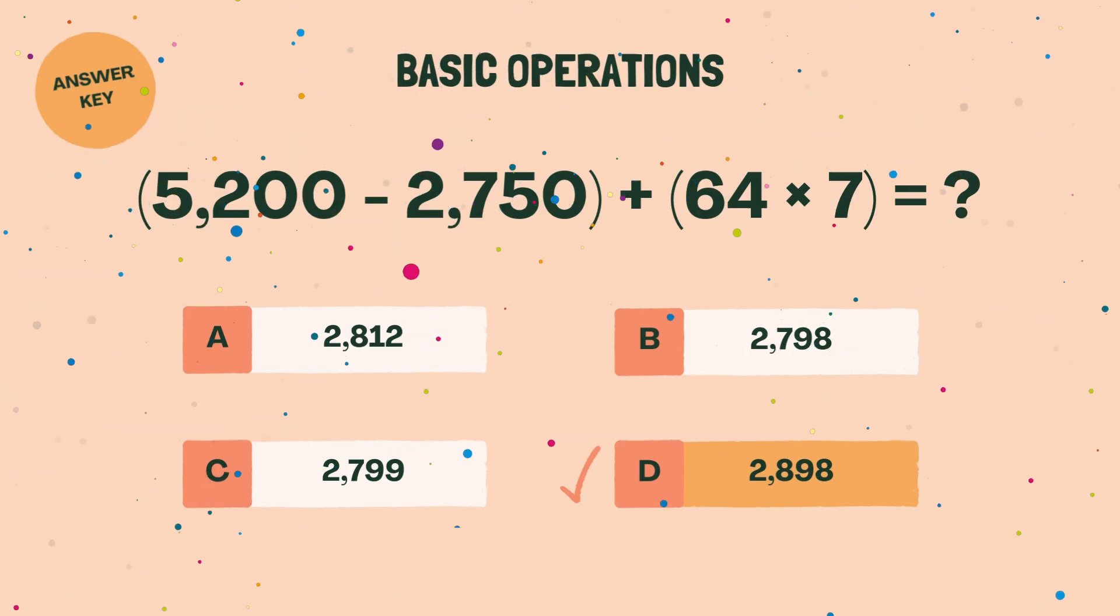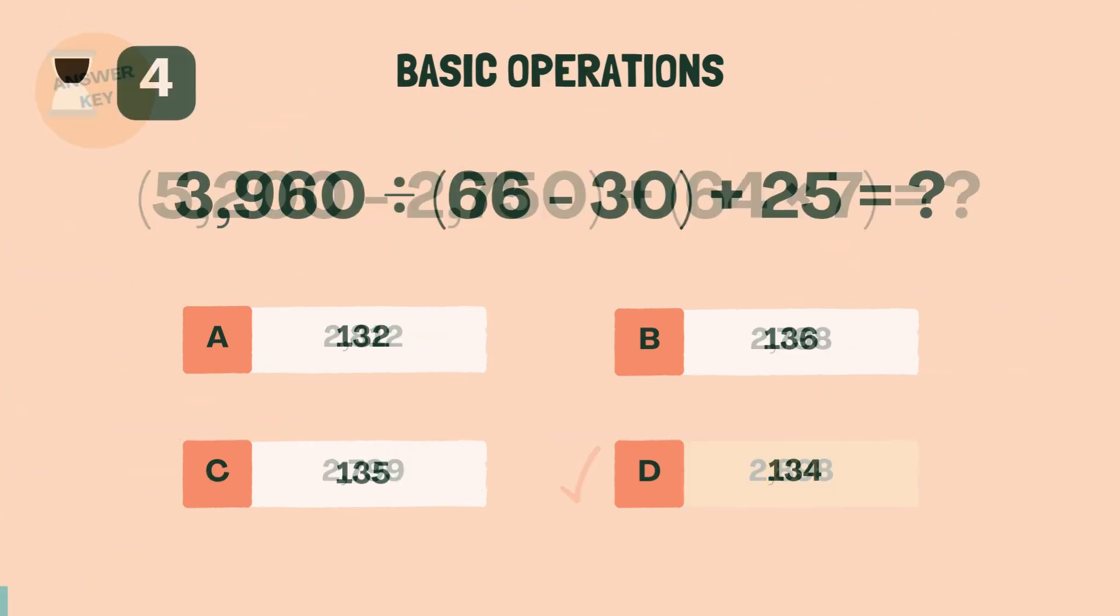What is 5,200 minus 2,750 plus 64 times 7? D, 2,898.